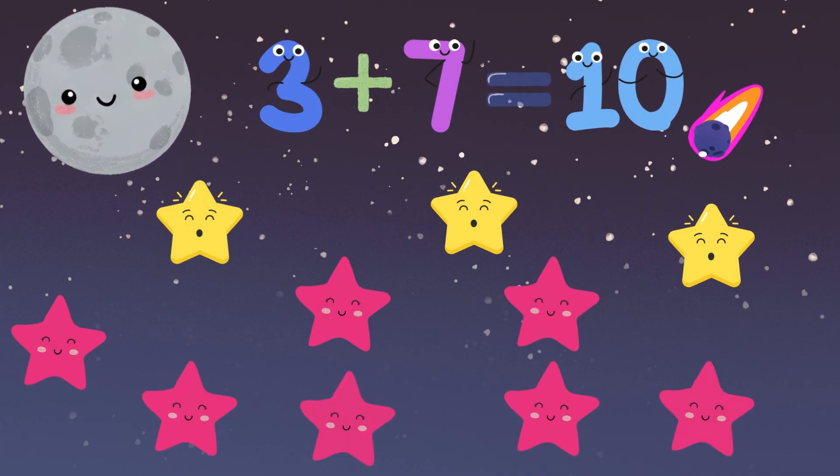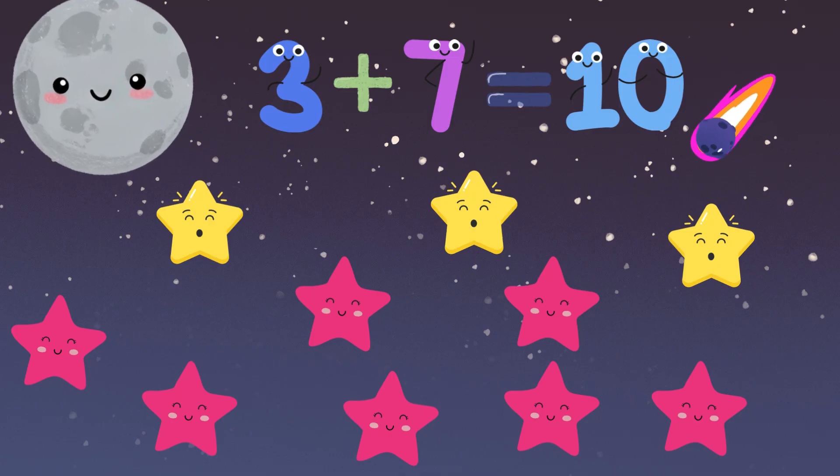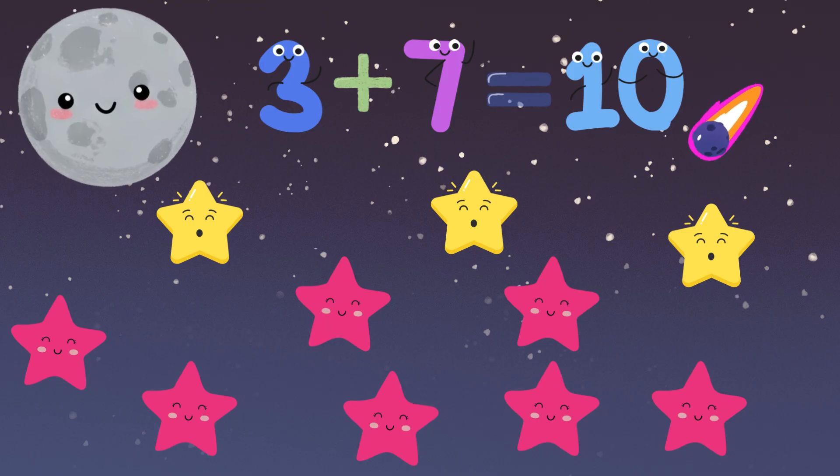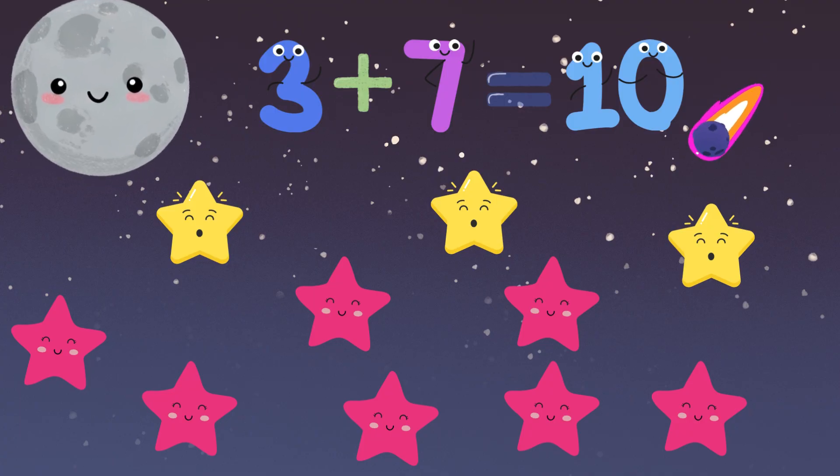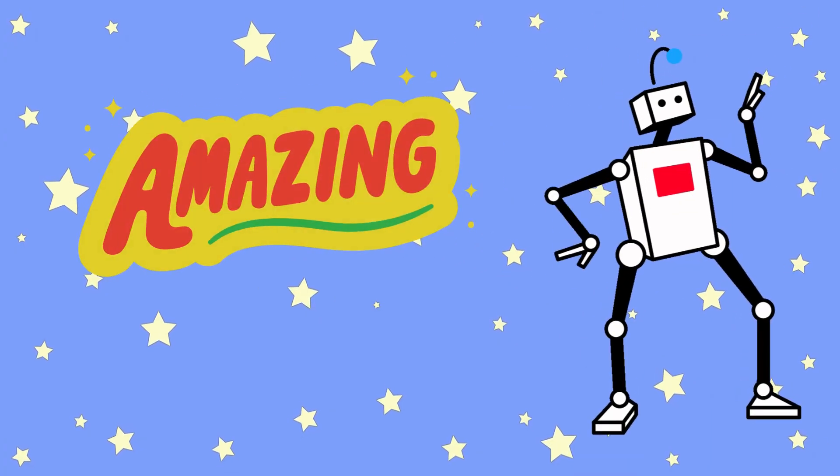Another number pair that makes 10 is 3 plus 7. 3 yellow stars plus 7 pink stars equal 10 stars. Now you count all the stars. Amazing. Dance break.